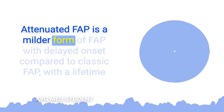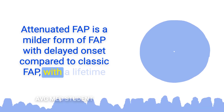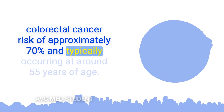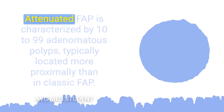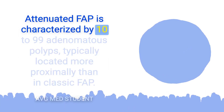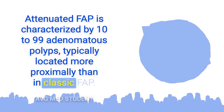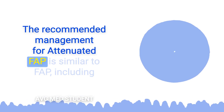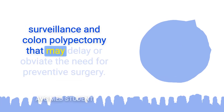Attenuated FAP is a milder form of FAP with delayed onset, a lifetime colorectal cancer risk of approximately 70%, and typically occurring at around 55 years of age. It is characterized by 10 to 99 adenomatous polyps, typically located more proximally than in classic FAP. The recommended management is similar to FAP, including surveillance and colon polypectomy that may delay or obviate the need for preventive surgery.